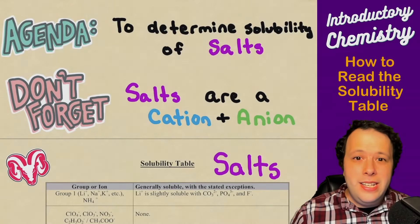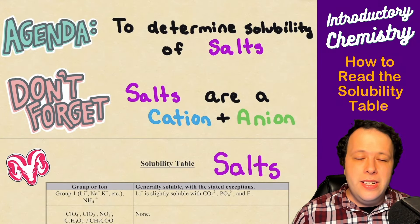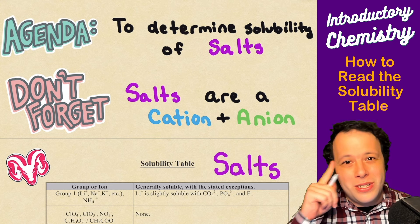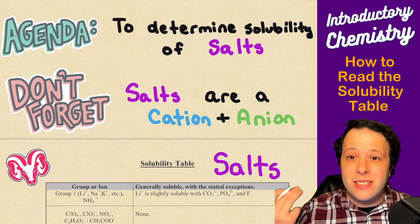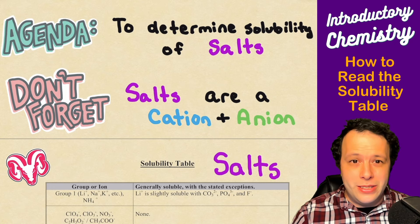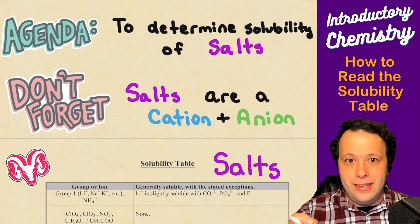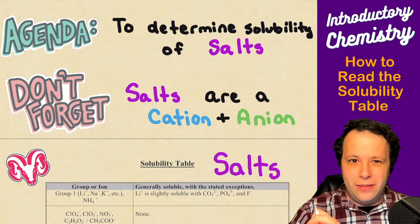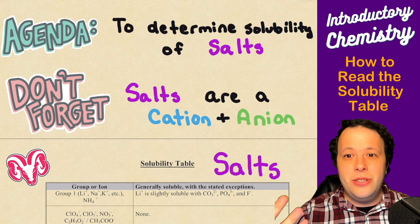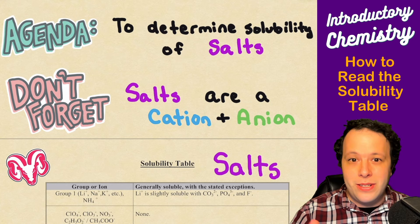Our agenda today is to determine the solubility of a salt. Don't forget what a salt is when that is said — the first thing you can think of is sodium chloride, what you put on your food every single day. Salts are a cation and an anion bound together, meaning you have a positive species binding to a negative species — so ionic characteristics.